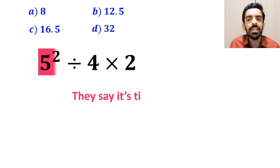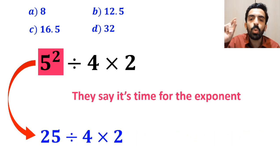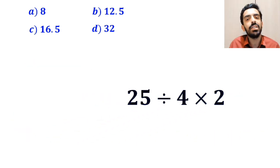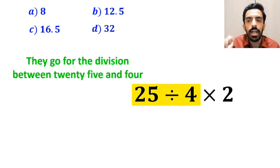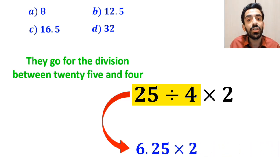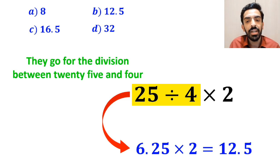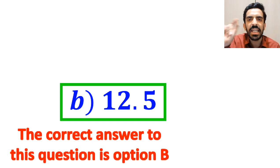They say it's time for the exponent, and instead of this expression, they write 25 ÷ 4 × 2. In the final step, they go for the division between 25 and 4, and simplify this expression to 6.25 × 2, which finally gives them the answer 12.5. Without any hesitation, they quickly say that the correct answer is option B.